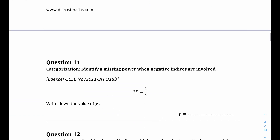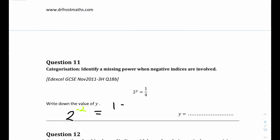Question 11: 2 to the power of y equals 1 over 4 - find y. We need a negative power to get a 1 over something. 2 to the power of minus 1 gives 1 over 2, which is not what we want. We need 4 in the denominator, and since 2 squared equals 4, the power must be negative 2. So 2 to the power of minus 2 gives 1 over 4. The final answer is y equals minus 2.